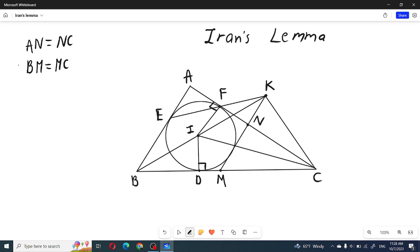angle BKC is 90 degrees, and we also need to show that K, N, and M are collinear. These N and M are midpoints of AC and BC. At first look, notice that DIFC is cyclic.